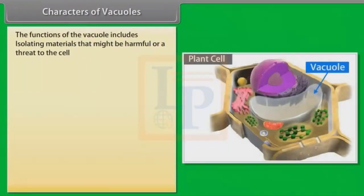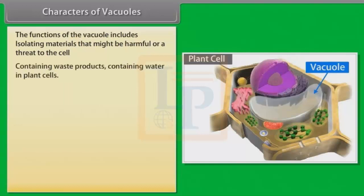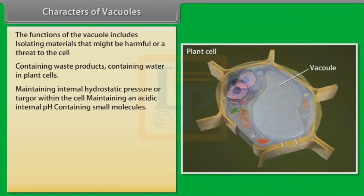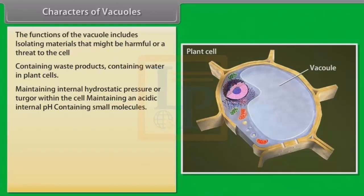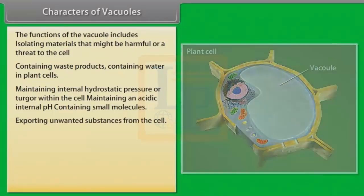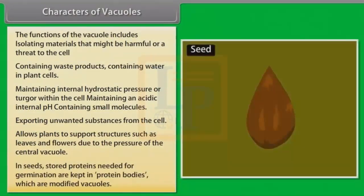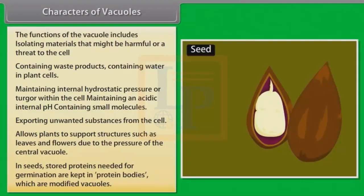The functions of the vacuole include: isolating materials that might be harmful or a threat to the cell; containing waste products; containing water in plant cells; maintaining internal hydrostatic pressure or turgor within the cell; maintaining an acidic internal pH; containing small molecules; exporting unwanted substances from the cell; allowing plants to support structures such as leaves and flowers due to the pressure of the central vacuole. In seeds, stored proteins needed for germination are kept in protein bodies, which are modified vacuoles.